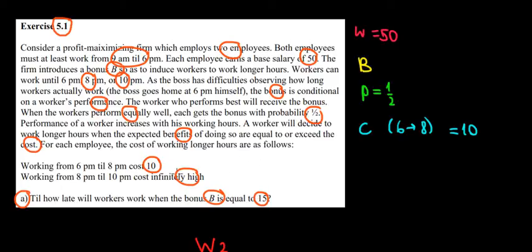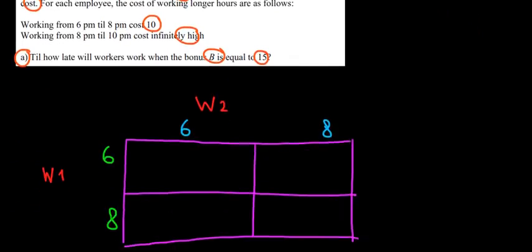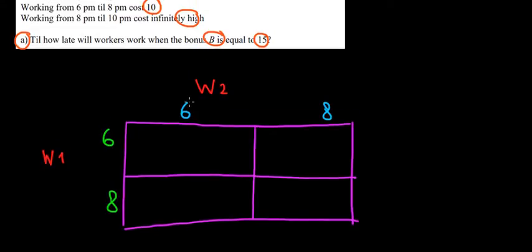When we deal with a second case where the cost is infinitely high, well infinitely high means it's probably much higher than 15, so it's not even worth taking that into account. What we're going to do now is a decision game based on these choices: working until 6 p.m. versus until 8 p.m.